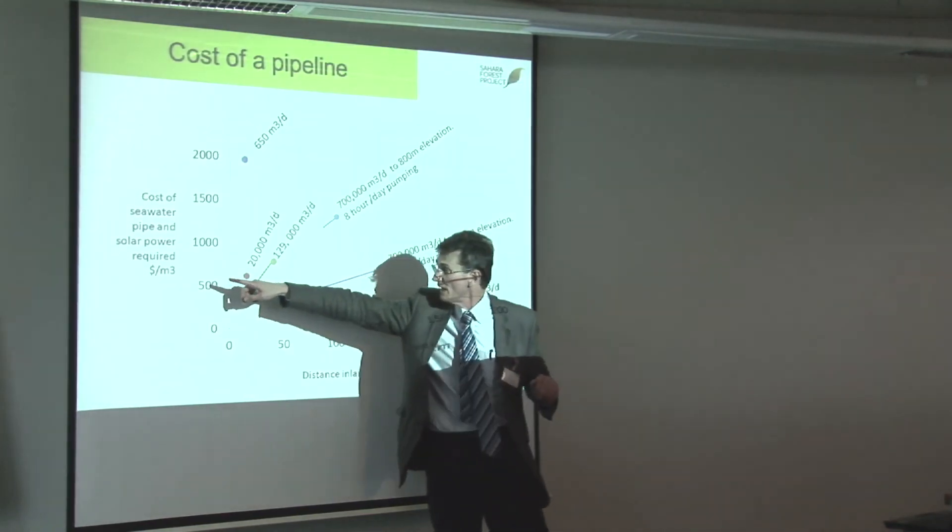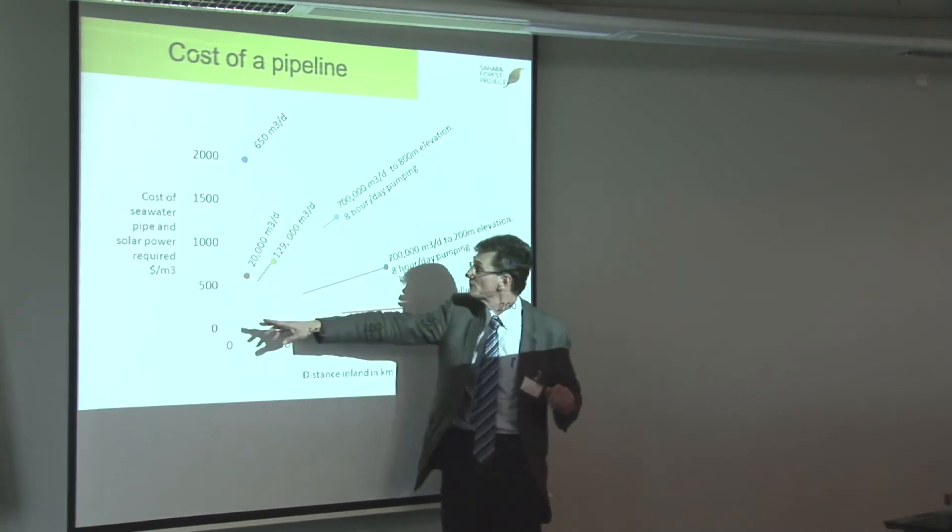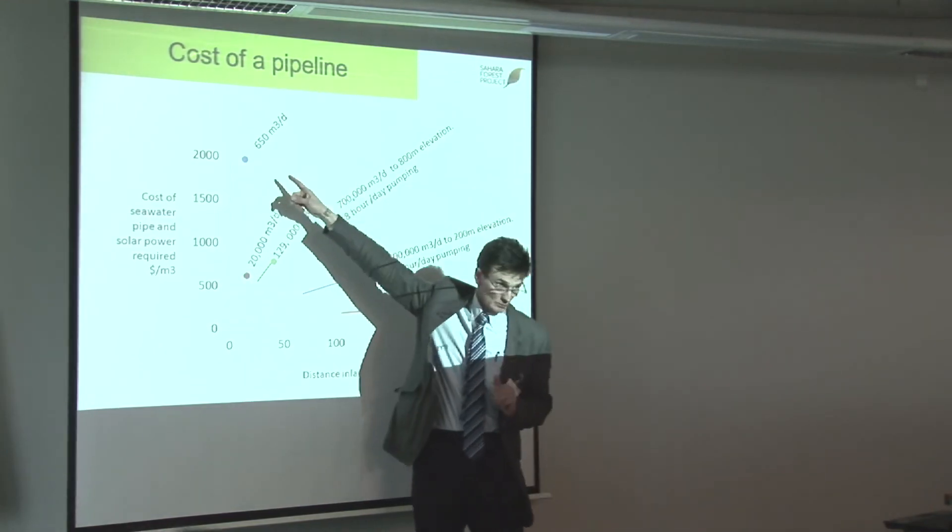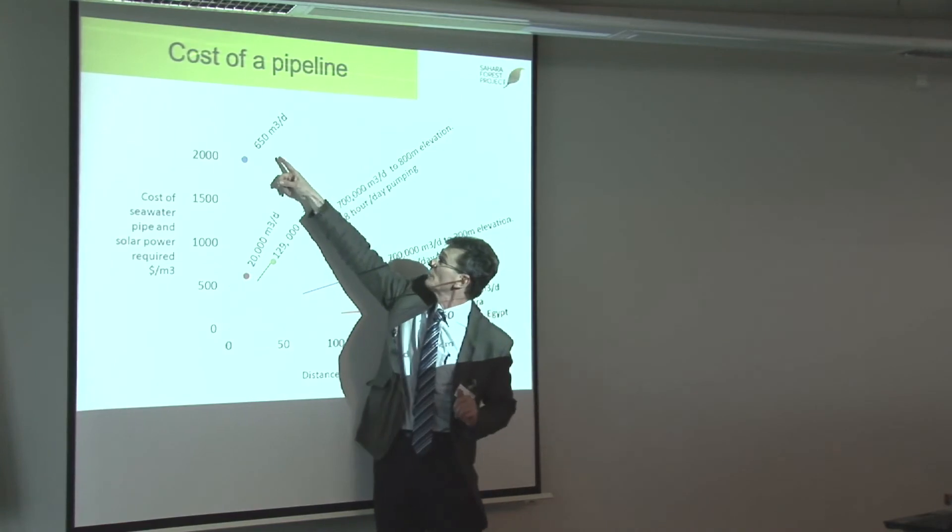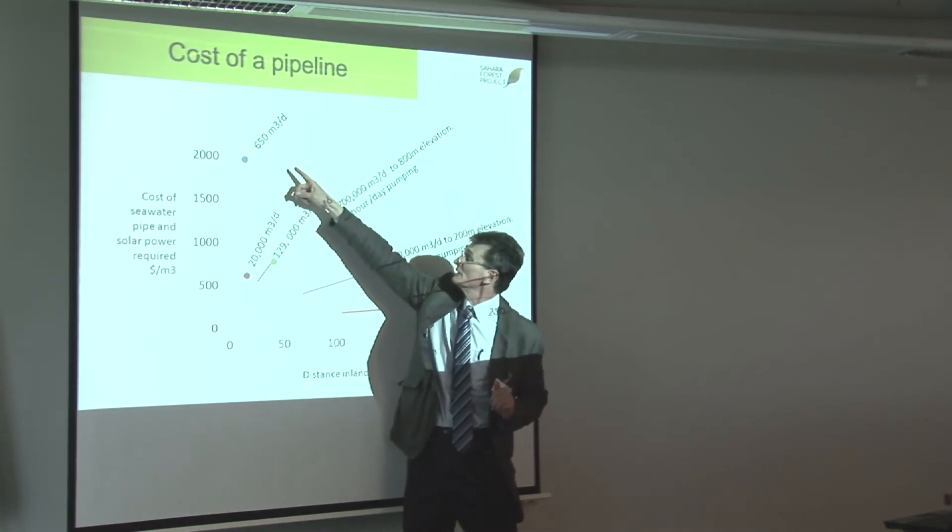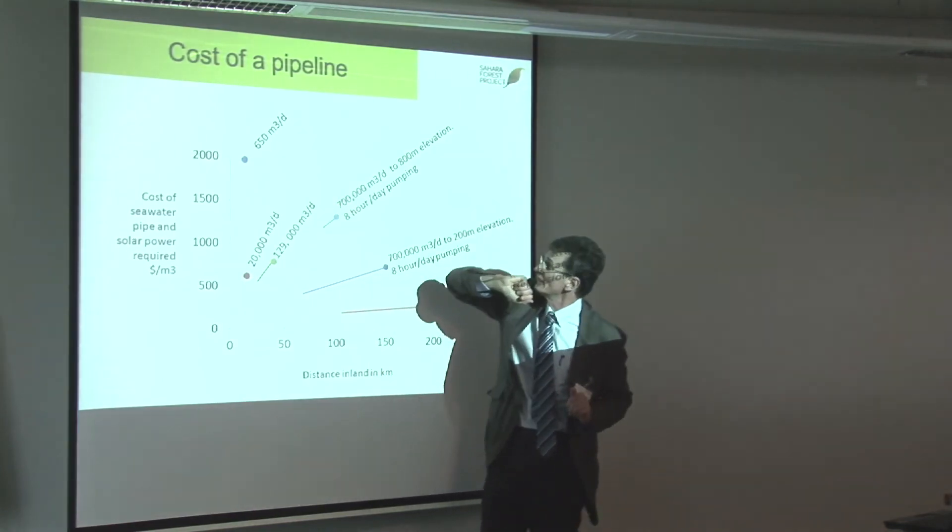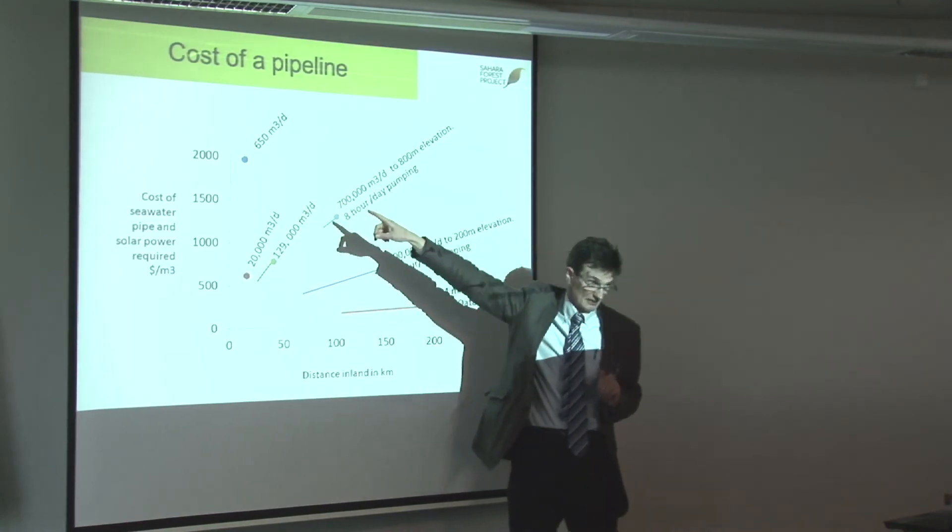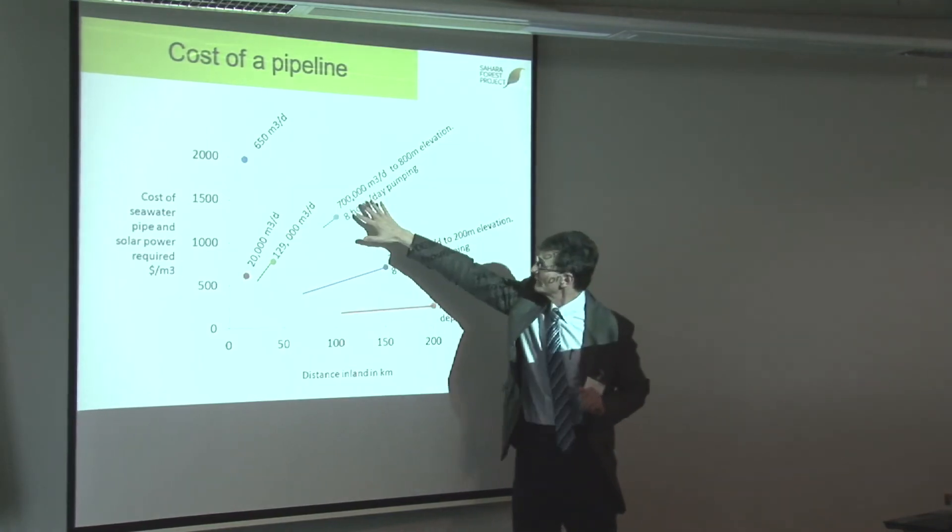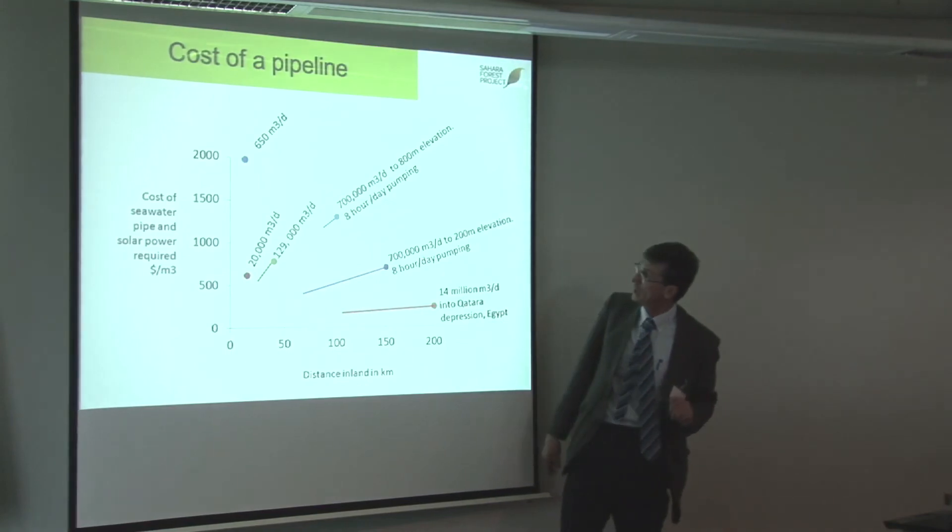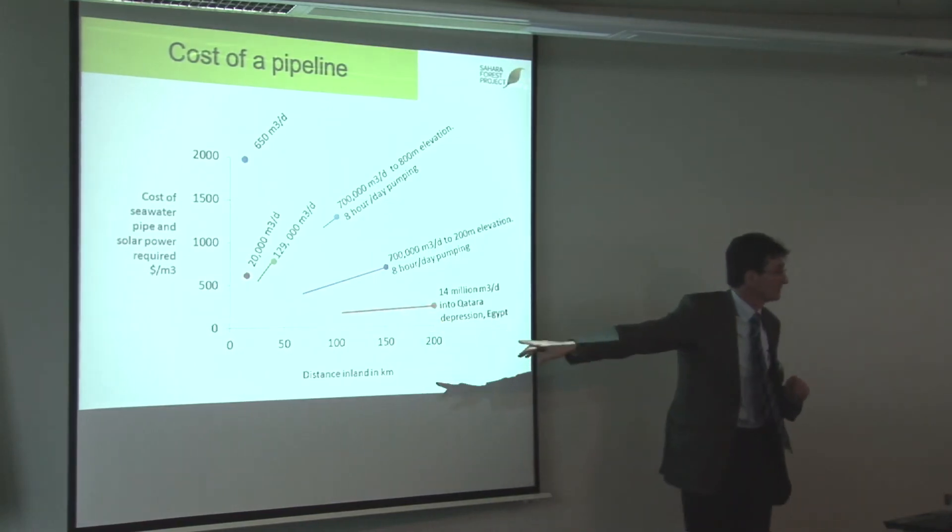Because the cost of the seawater pipeline, unitized in terms of dollar per cubic meter of water, goes up at a very small, if you're only producing 650, pumping 650 meter cube per day, it's about $2,000 a cubic meter. Whereas you get to bigger numbers, the cost drops.